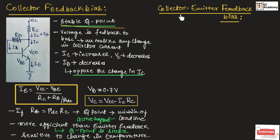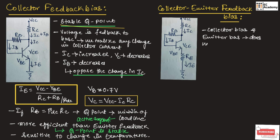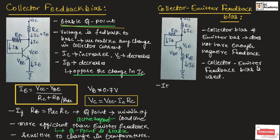Now let us understand collector emitter feedback bias. The figure shows the collector emitter feedback bias circuit. The difference between collector feedback and collector emitter feedback bias circuit is that we are adding a resistor across the emitter terminal. This provides the required negative feedback to the circuit and the Q-point will be more stable. It is the combination of both collector feedback and emitter feedback bias.